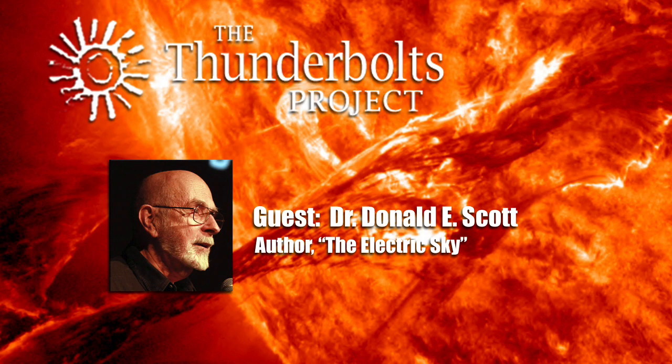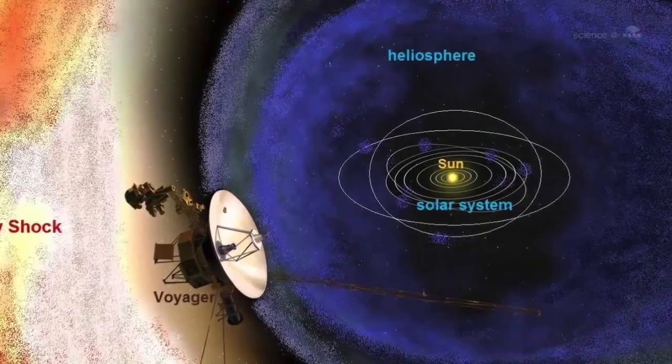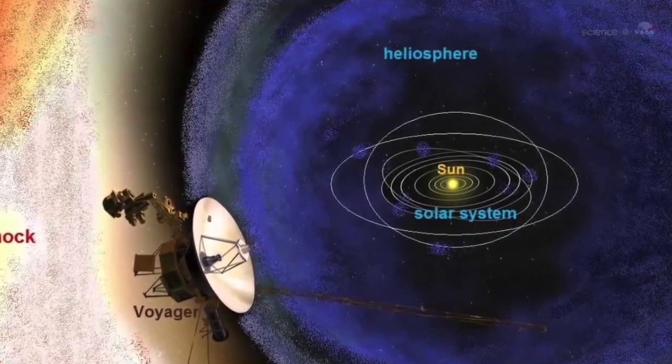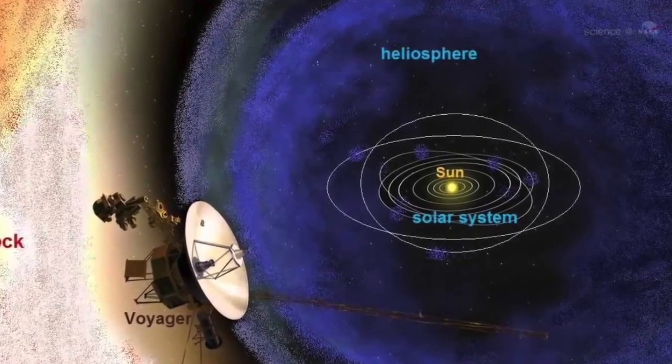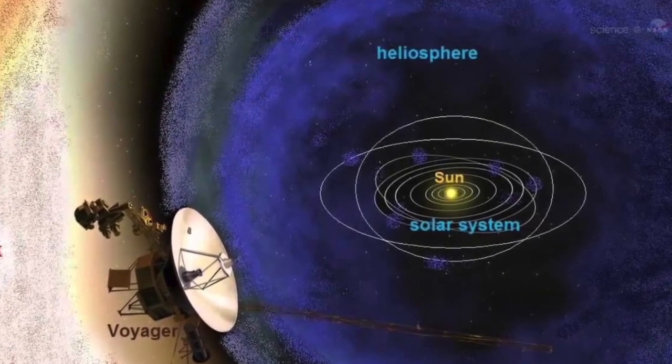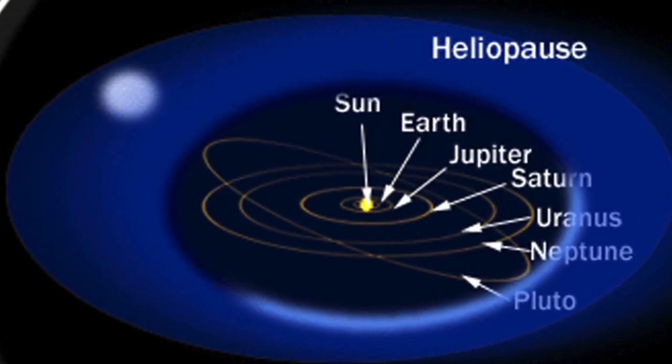It's also true in the classical plasma lab experiment. Alfvén did, and Langmuir did, and there is often a double layer of charge just outside the cathode, just above the cathode. It's called the cathode drop. And in the case of the heliosphere, the heliosphere in the Electric Universe model, is the outer layer of the heliopause. It serves as a virtual cathode.